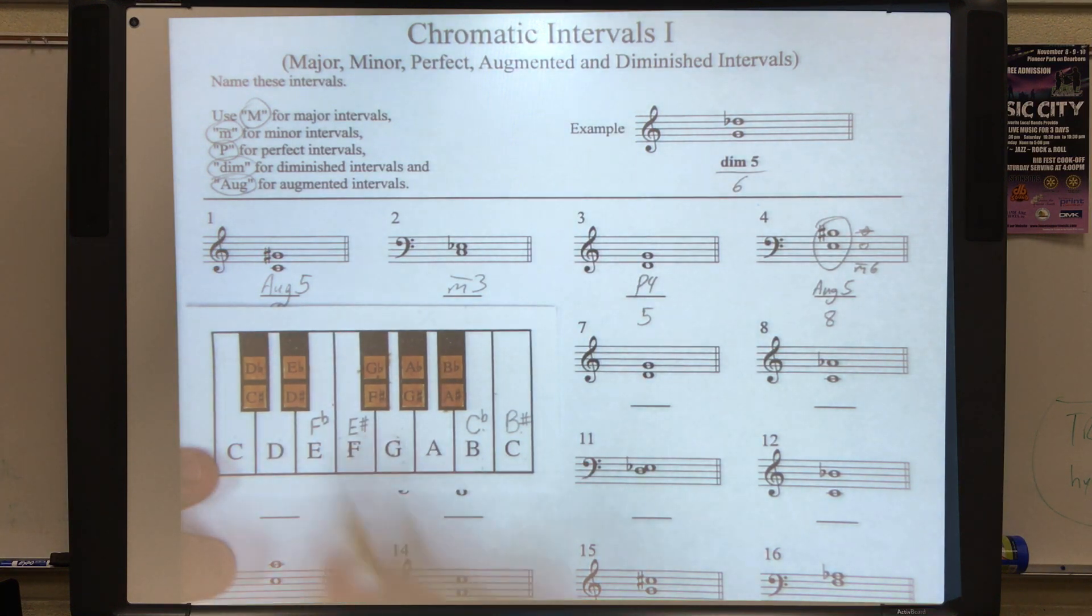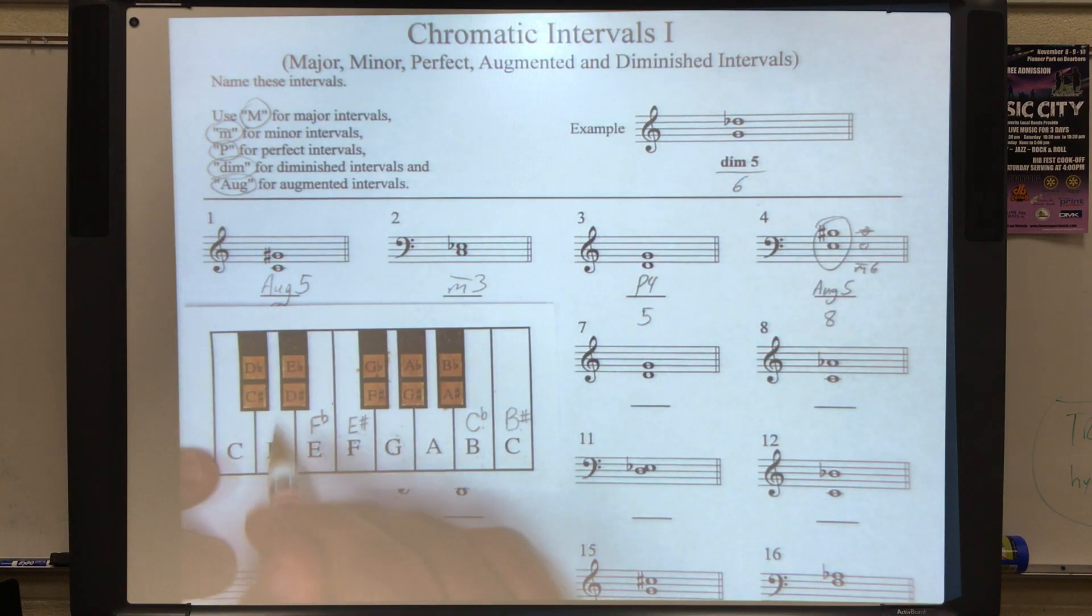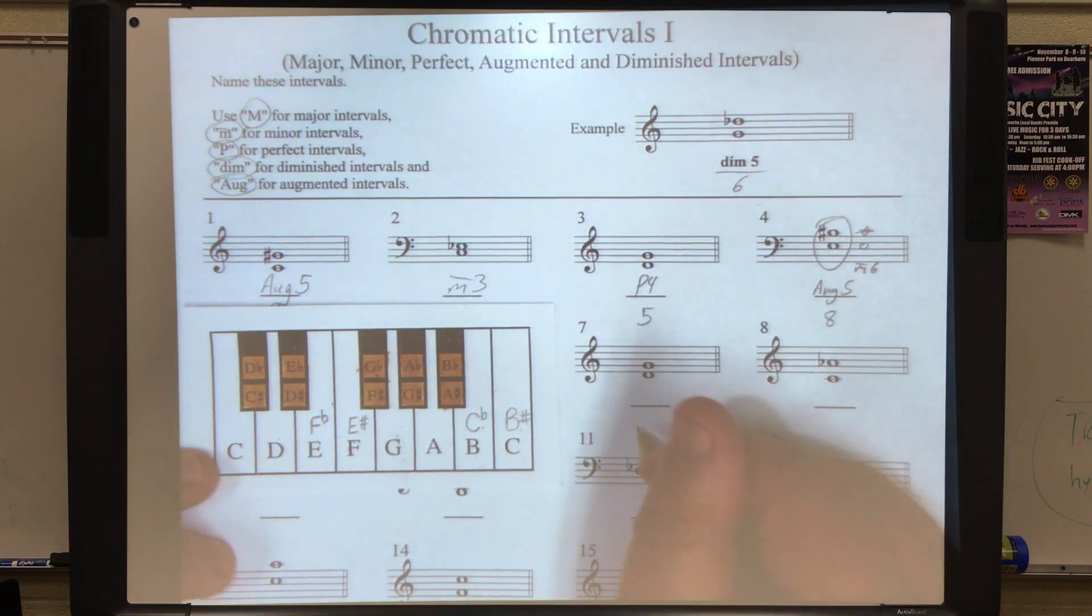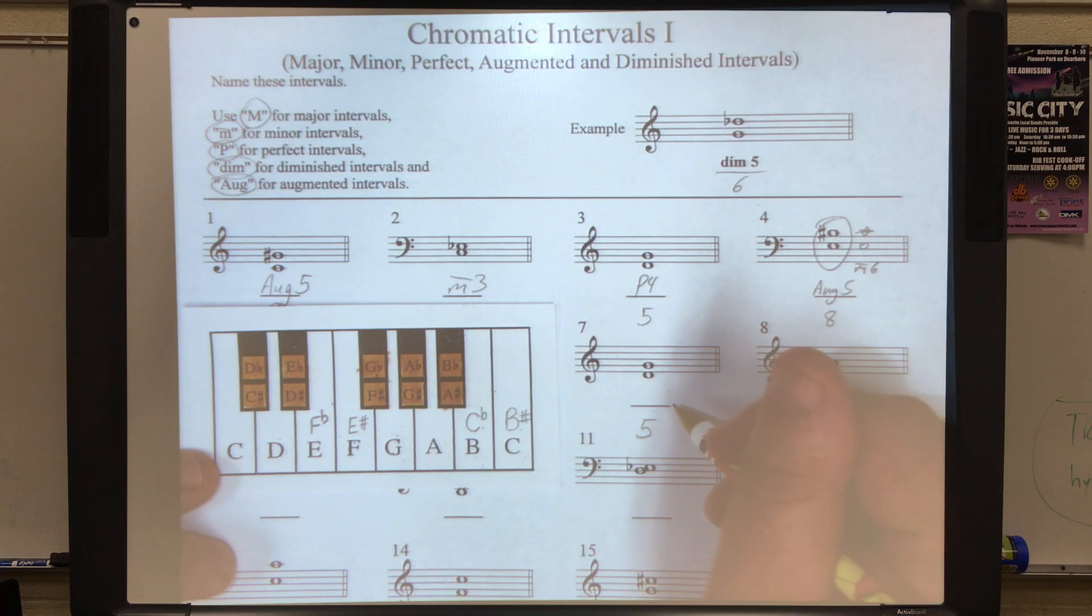Number seven. D to a G. D is zero, one, two, three, four, five. Five half steps. Look at our chart. Perfect four.